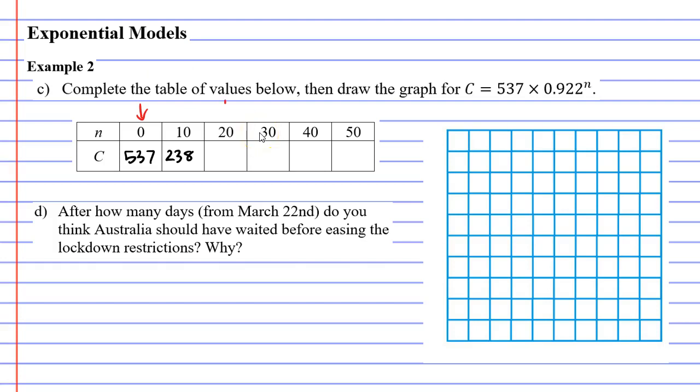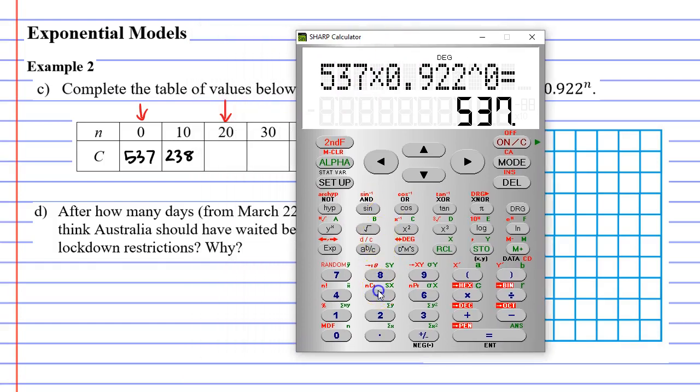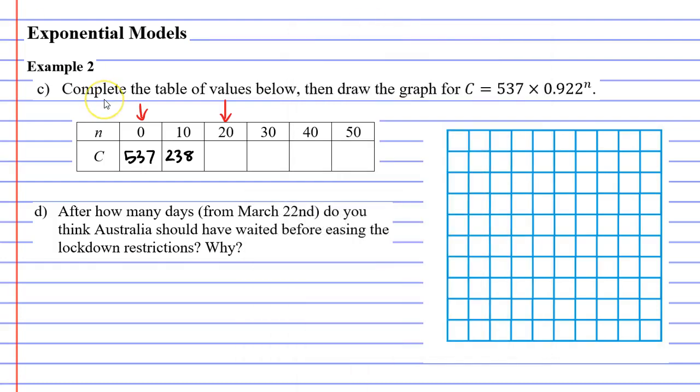Let's do the next column, when N equals 20. So this time, it's 537 times 0.922 to the power of 20. And we get about 106 cases this time. So we can see the cases going down, which is what we want to see. It's exponential decay. What I'm going to do is I'm going to pause and finish this off. I'd like you to do the same.